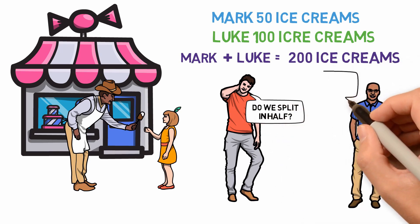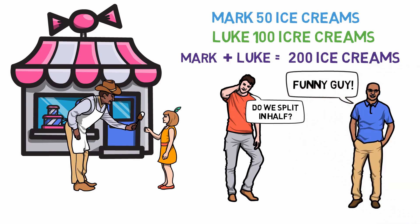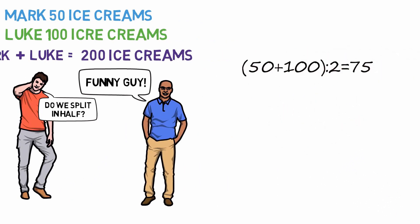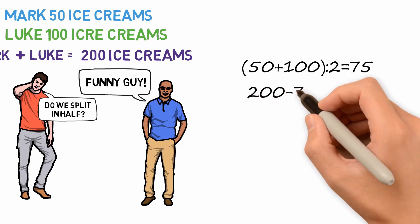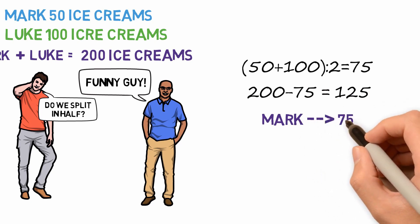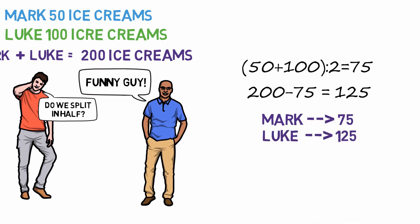If Mark alone would have sold 50 ice creams and we subtract these from the total of 200 sold, Luke would be credited for 150 ice creams — maybe a bit too much. If Luke alone would have sold 100 ice creams and we subtract these from the total of 200, Mark would be credited for 100 ice creams — also seemingly too much. Using the Shapley formula: first, make the sum of the two values sold separately — 50 plus 100 — and divide by 2, giving 75. This is what Mark should receive, while Luke receives the remainder: 200 minus 75, which equals $125. Most people would have split the profit proportionally — one-third to Mark and two-thirds to Luke — but the Shapley Value gives a different, fairer result.